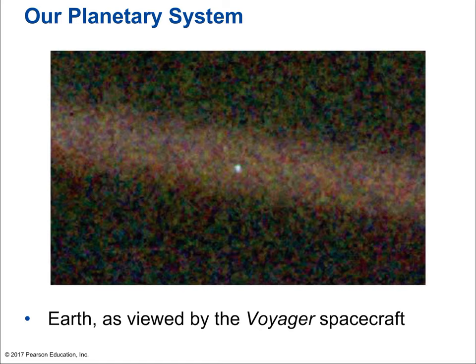We still have a bit of groundwork to lay in terms of understanding some physical ideas. Here is our planetary system — this is Earth viewed by the Voyager spacecraft, looking back at Earth from a distance outside of Neptune's orbit. We're just a pale dot that barely shows up against the background noise of the photo, created by variations in radiation affecting the photograph. Voyager has a very old-fashioned digital camera, built many years ago and traveling through space for decades.